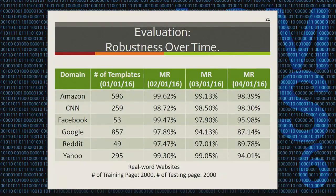Next, we want to see how long a template can maintain a high matching rate without an update. We selected six popular websites and crawled 2,000 webpages on four different days: January 1st, February 1st, March 1st, and April 1st. We used data collected on January 1st to build a template, then used it to match scripts from the remaining three days. Amazon, CNN, and Facebook's templates maintain a high matching rate for three months. Reddit and Yahoo's templates work well for two months, and Google's templates need to be updated every month.